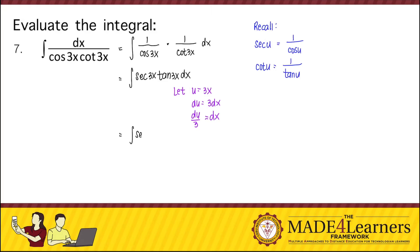And we substitute in our integrand. That's secant u tangent u du over 3. So we put the constant outside. That's 1 third secant u tangent u du. And so we integrate that would give us 1 third secant u plus c. And then using the original variable that's 1 third secant of 3x plus c.